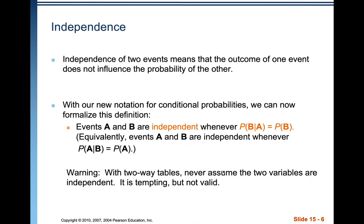Independence of two events means that the outcome of one event does not influence the probability of the other. Drawing two cards from a deck is not independent because the probability of drawing the Queen of Hearts is 1 out of 52. Once you have that card, the probability of getting the Ace of Spades goes to 1 out of 51 because there are only 51 cards left.